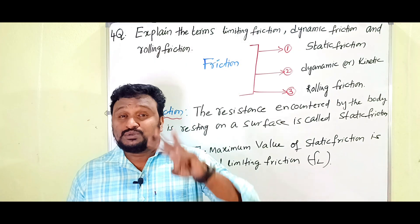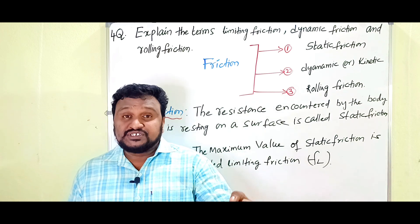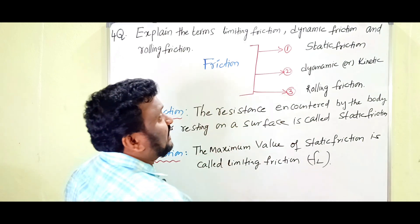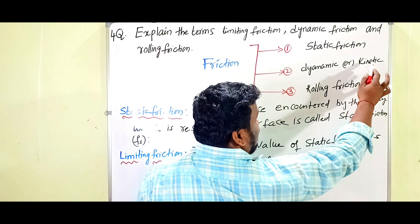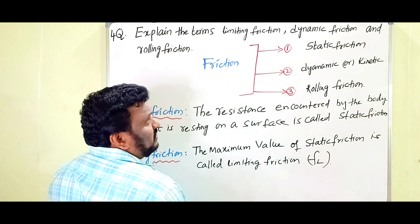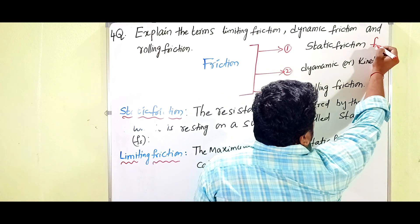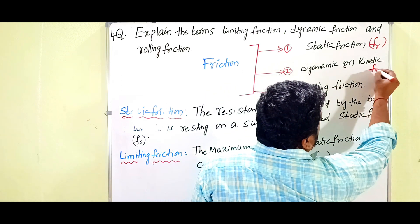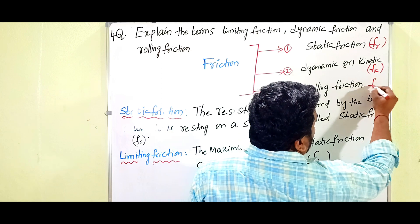Friction can be divided into three types: static friction, dynamic friction, and rolling friction. Dynamic friction is also called kinetic friction or sliding friction. Static friction is represented by the symbol FS, dynamic or kinetic friction by FK, and rolling friction by FR.